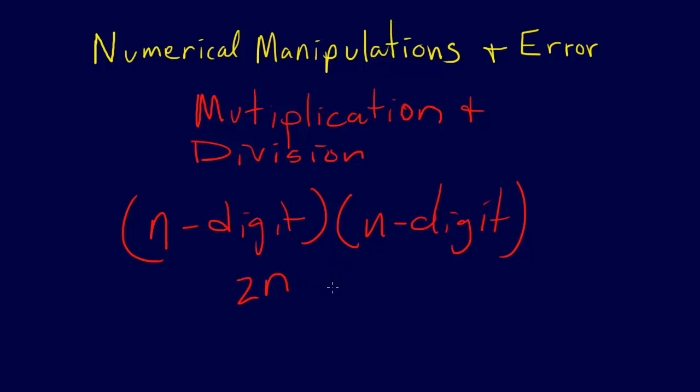And it may have leading zeros in the result. But we avoid problems because all we have to do is store this 2n result intermediately in a register that's big enough.